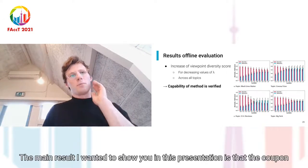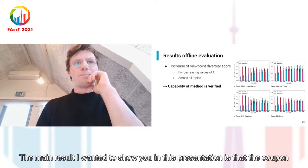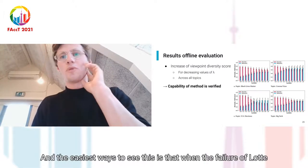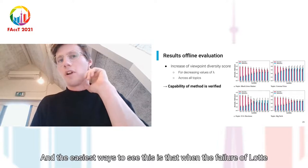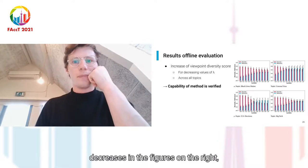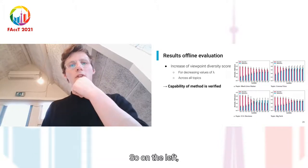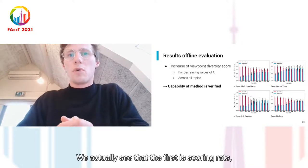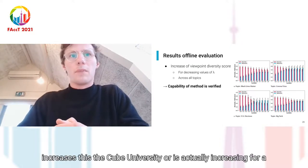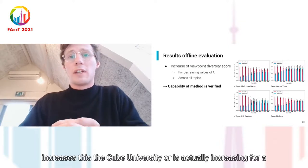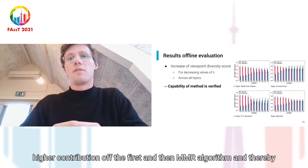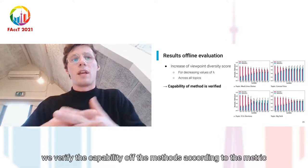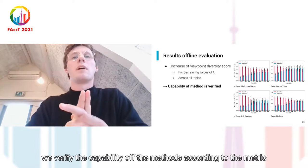The main result I want to show is that the viewpoint diversity score actually increased according to the metric. The easiest way to see this is that when the value of lambda decreases — so at lambda 0 — we see that the diversity score in red increases. Thus, the viewpoint diversity score is actually increasing for a higher contribution of diversity in the MMR algorithm, and thereby we verify the capability of the method according to the metric.